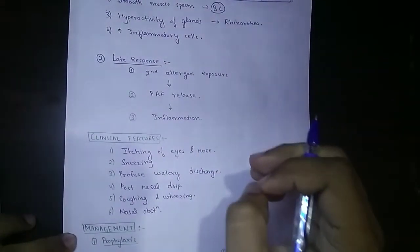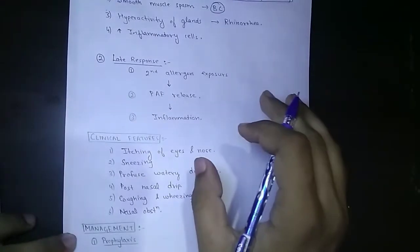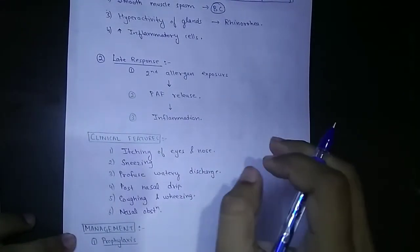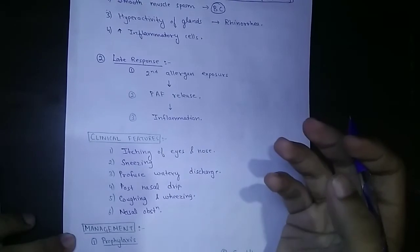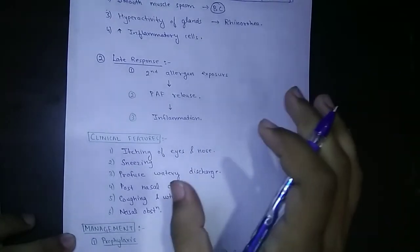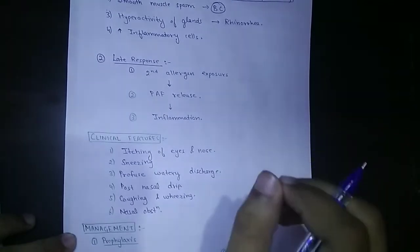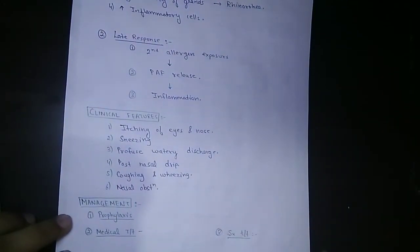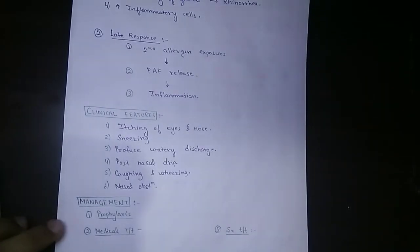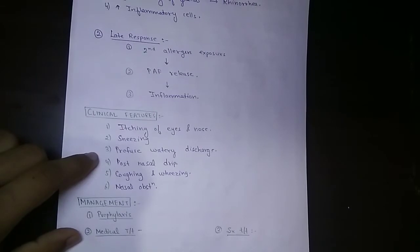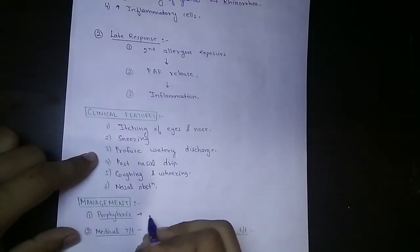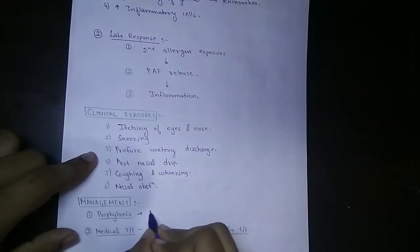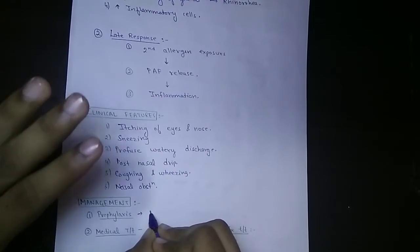Now the last part is management. Management can be done in three ways: firstly, we can prevent allergic rhinitis through prophylaxis. The other method is medical treatment and the last is surgical treatment. Prophylaxis is nothing but avoidance of the allergen — the patient should avoid the allergen.